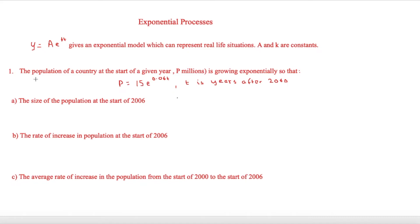This particular question is looking at the population of a country. The population of a country at the start of a given year is given by P millions, and that is growing exponentially so that P equals 15e to the 0.06t, where t is years after 2000.